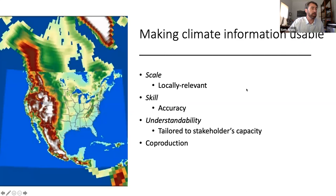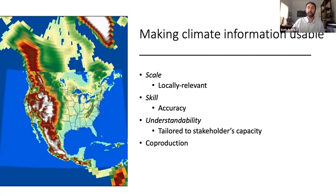In talking about how to make climate information more usable, I'm going to break this down into four parts: one, scale — is this climate information locally relevant? What's the skill of this information? Is the information understandable? And finally, the concept of co-production, meaning organizations like ourselves working actively with end users of climate information to develop that climate information or research to ensure that it's highly useful.